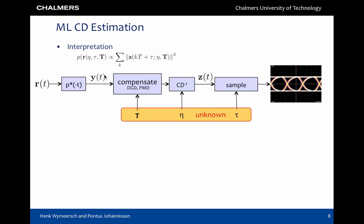The hypothesized values of T, eta, and tau should be such that the energy of the symbol rate samples is maximized. This can be interpreted as maximizing the eye opening.